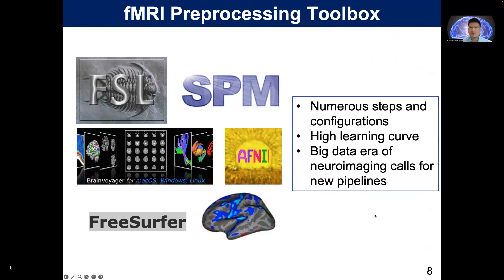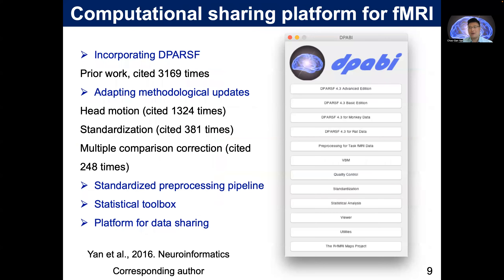There are lots of processing toolboxes in the field like FSL, SPM, and AFNI. They have lots of steps and configurations, and some software are very difficult to learn. In the big data era, we need new pipelines that are very easy to use to handle big data. So in 2010, I built a software called DPABI, and it has been cited more than 3,000 times. I included modules and adapted major software updates.